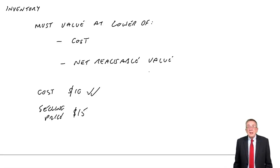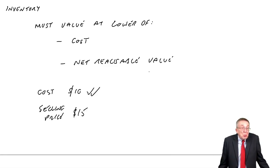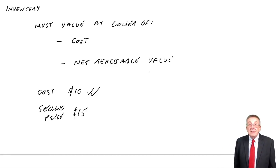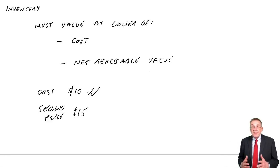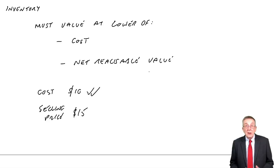Because otherwise, you'd be taking profit when they haven't actually been sold. You know, I think I'm going to sell them for $15. We may end up selling them for different than $15. I only record the profit when they are actually sold. Anything in inventory must be valued at the lower, it must be valued at cost.